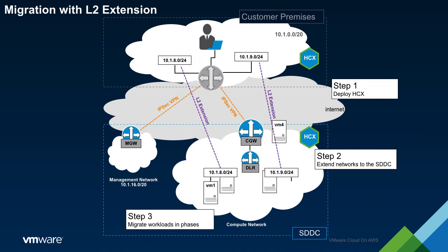Let's look more closely at the network path for the migrated workloads. The extended networks are not tied to the routing infrastructure of the SDDC, but are completely isolated outside of the L2 extension to on-prem. This means that the workloads will continue to utilize the on-prem router as their default gateway.